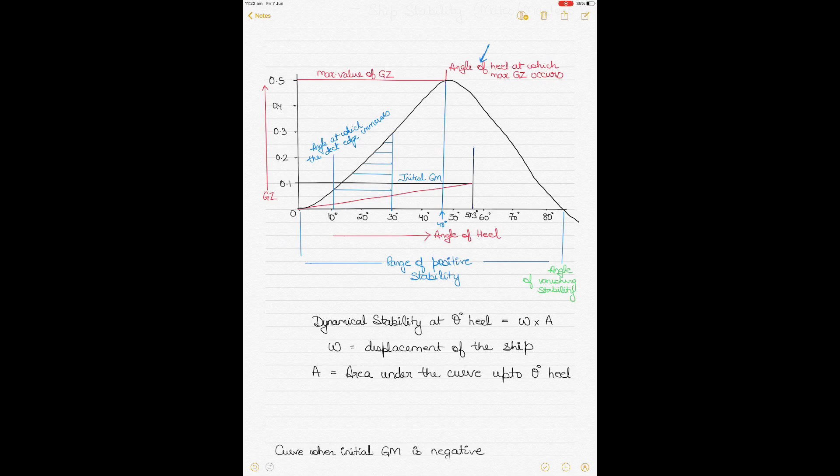The next thing you can see is the maximum value of GZ, which in this case would be about 0.5 or 0.51 — that is the maximum value of GZ, or the righting lever, that you can obtain.